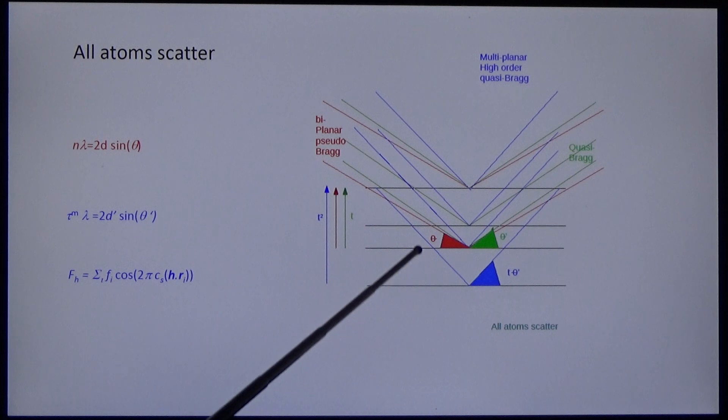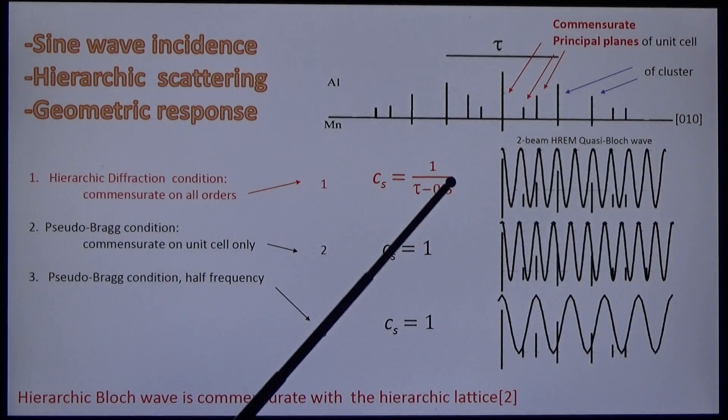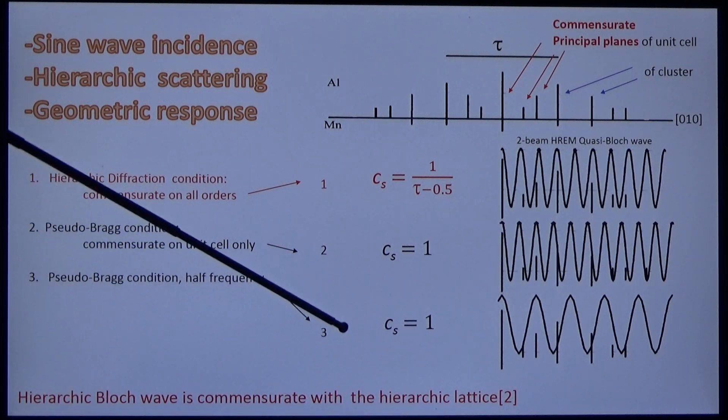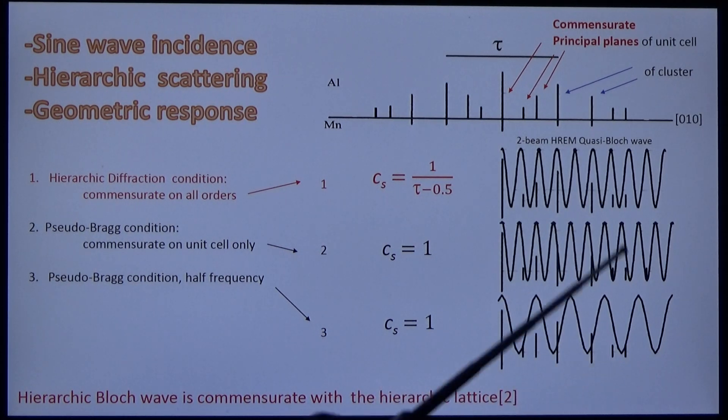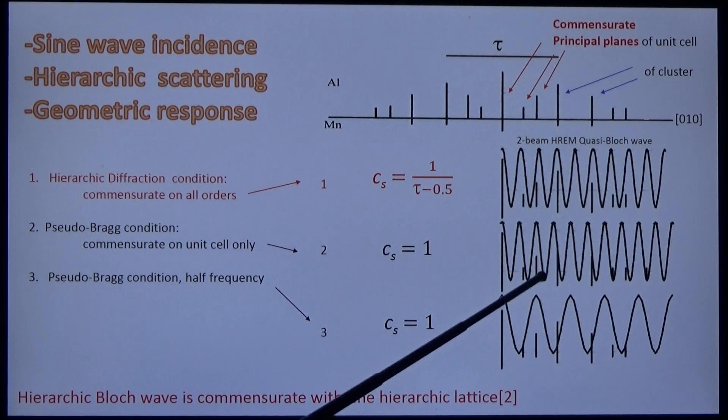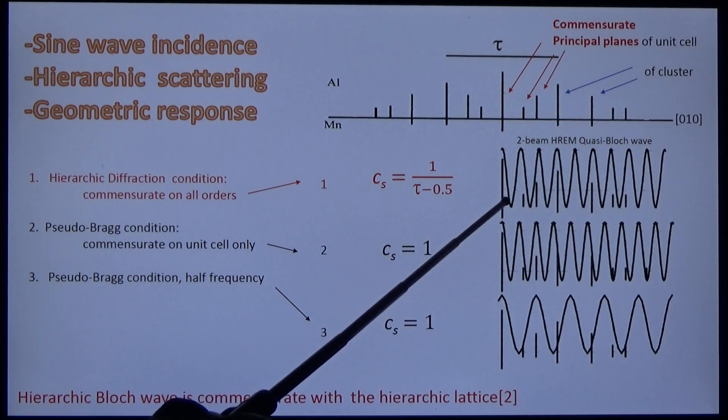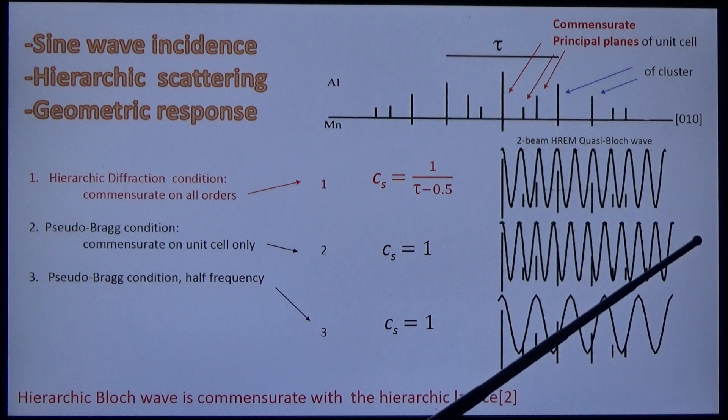The quasi-crystal is multi-planar. To know how the phases add, you have to calculate the quasi-structure factor. But you can get more information from the quasi-block wave. What is the block wave? It's the lattice image in the two-beam condition. It's caused by the interference between an incident beam and the Bragg-reflected beam. These two pseudo-Bragg block waves are commensurate at the unit cell, but not at the cluster and higher orders. What we have to do is stretch the axis by the inverse of the metric, and then we get approximate commensuration, both at the unit cell, the cluster, and all higher orders.